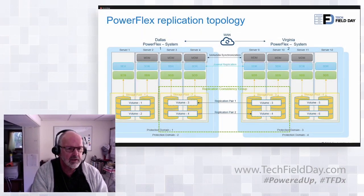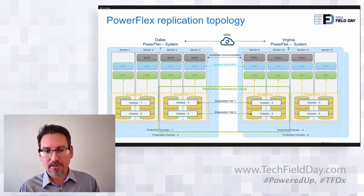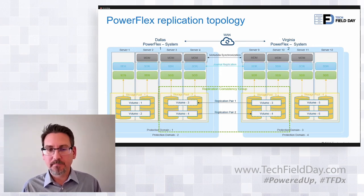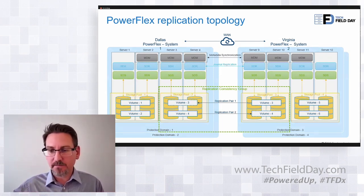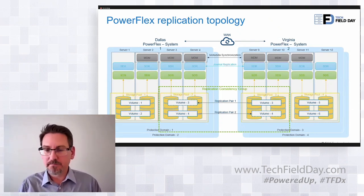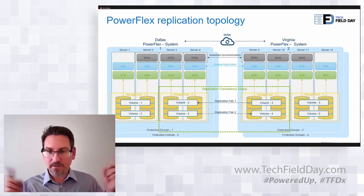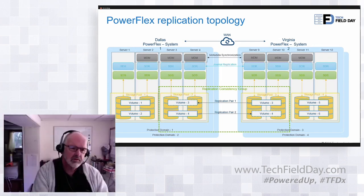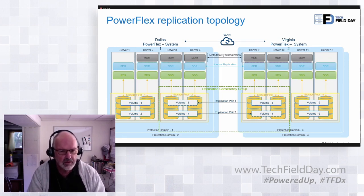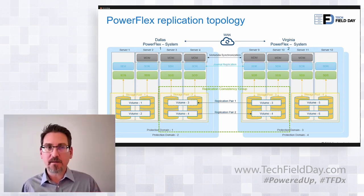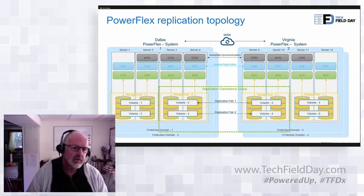Consistency groups are within the same protection domain — which is a slightly broader category than a storage pool. The source and target don't have to match: you could have thin-provisioned, compressed volumes in a fine granularity storage pool on the source and send them to different media and a different data layout on the target. There is some asymmetry allowed between sources and targets. The replication is journaled asynchronous, with RPO configurable between 30 seconds and one hour.